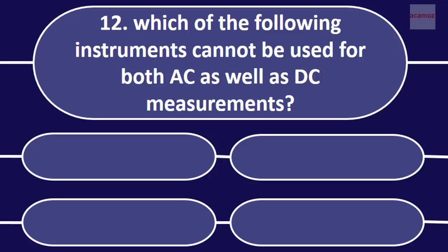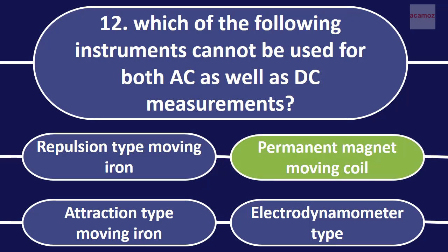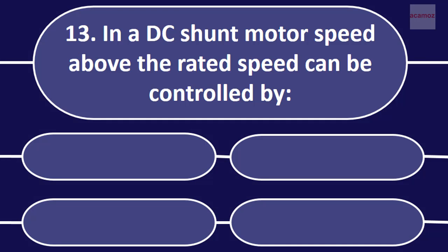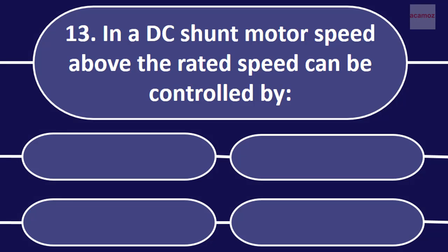Which of the following instruments cannot be used for both AC as well as DC measurement? Permanent magnet moving coil.